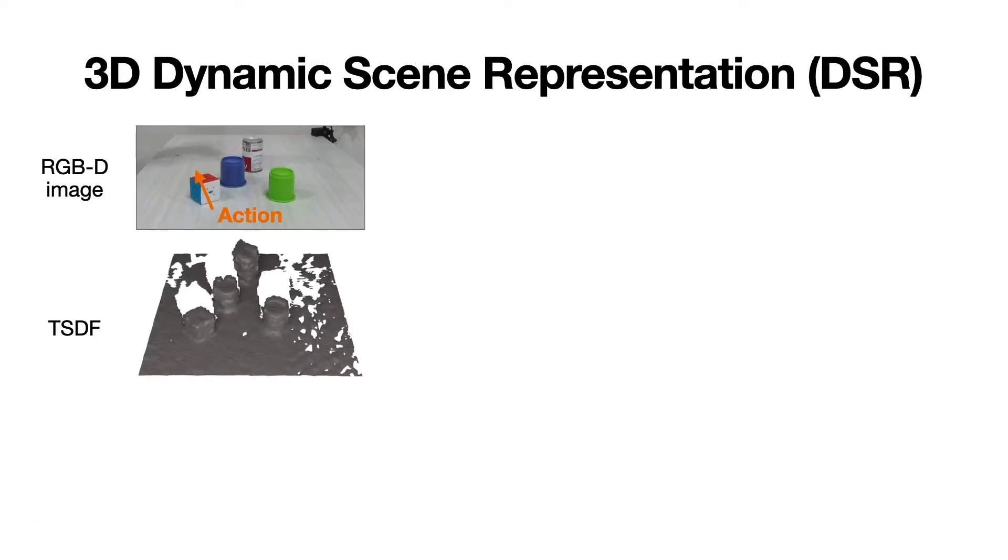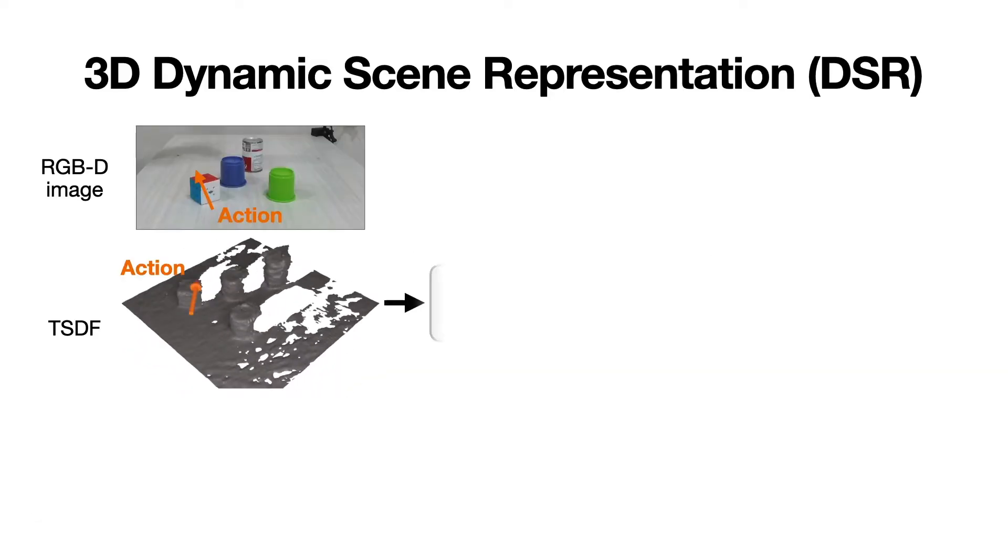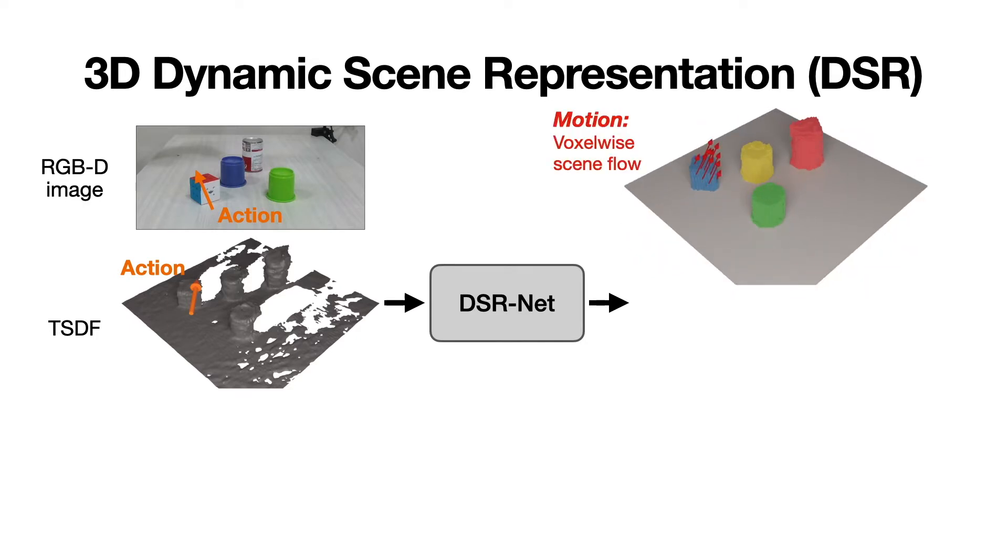Given a depth observation of a scene with an action applied to the scene, the goal of the algorithm DSRNet is to predict the object's motion under the interaction. The object's motion is encoded as a dense, voxel-wise 3D scene flow. To enable this prediction,